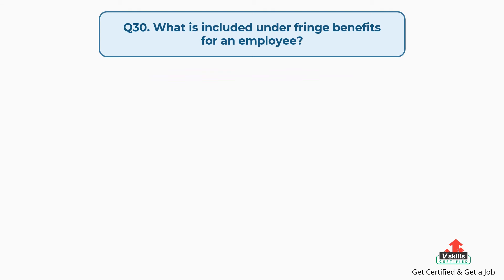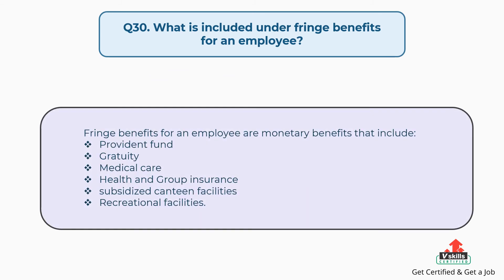Question number thirty: What is included under fringe benefits for an employee? The answer is, fringe benefits for an employee are monetary benefits that include provident fund, gratuity, medical care, health and group insurance, subsidized canteen facilities, and recreational facilities.